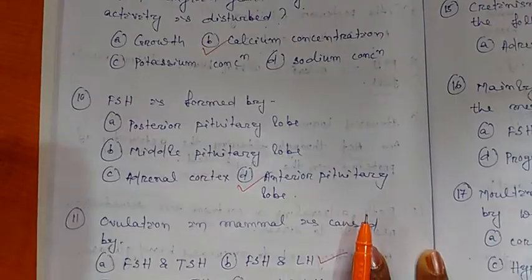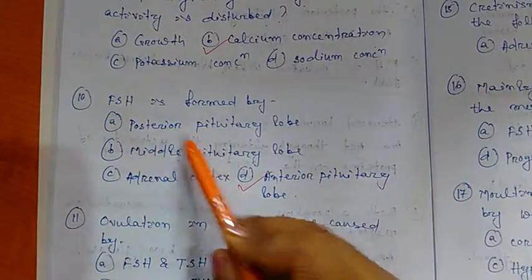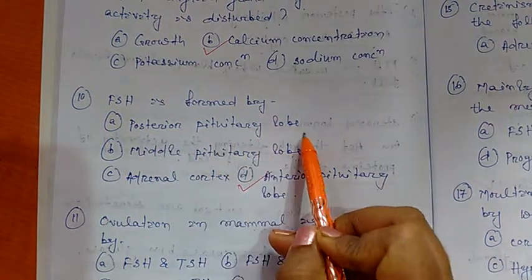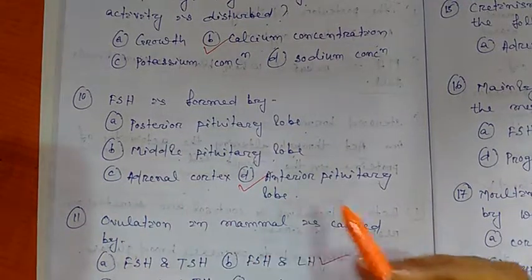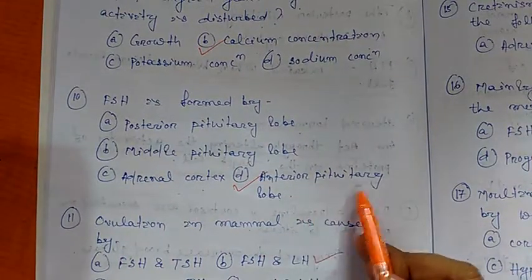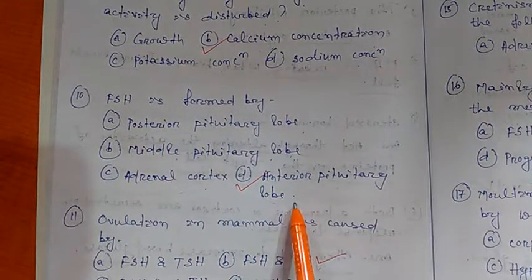FSH, that is follicle stimulating hormone, is formed by A. posterior pituitary lobe, B. middle pituitary lobe, C. adrenal cortex, or D. anterior pituitary lobe. So FSH is formed by anterior pituitary lobe.